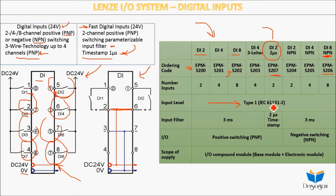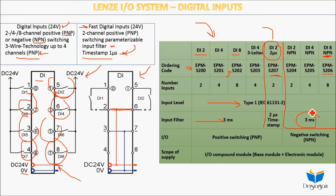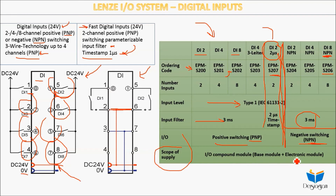The input levels are standard Type 1, IEC 61131-2. Input filters range from three milliseconds for standard digital inputs down to two microseconds for the fast digital input — two microseconds for the timestamp. For NPN inputs, the input filter is also three milliseconds. This filter time is how long it takes to read your input into your PLC program. The IO types shown are PNP and then NPN negative switching, meaning you give either 24 volt or zero volt to your inputs.